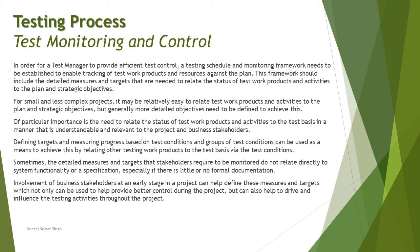For smaller and less complex projects it may be relatively easy to relate test work products and activities to the plan. Work products learned at foundation level — such as test cases, test conditions, test procedures, test execution reports, and execution schedules — must have good traceability with their respective test basis, which helps measure how effectively everything is being executed and what coverage has been achieved. For a small project this may be straightforward, but generally more detailed objectives need to be defined to achieve this.